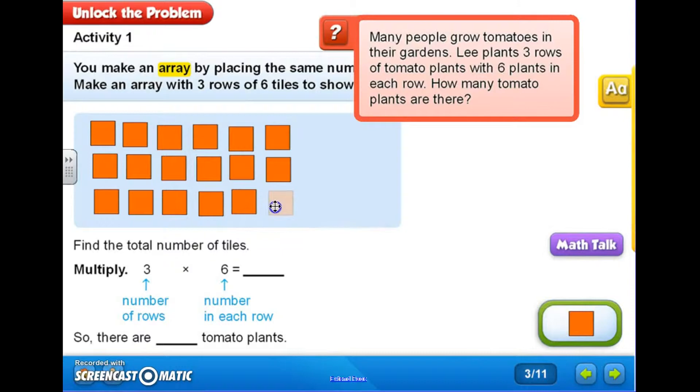So now I have made an array of the garden with the tomato plants, and I have made a three by six array: three rows with six in each row.